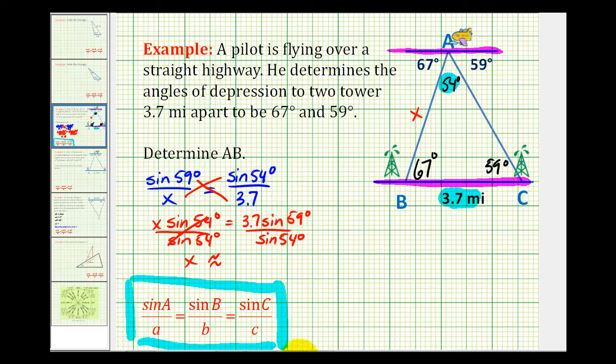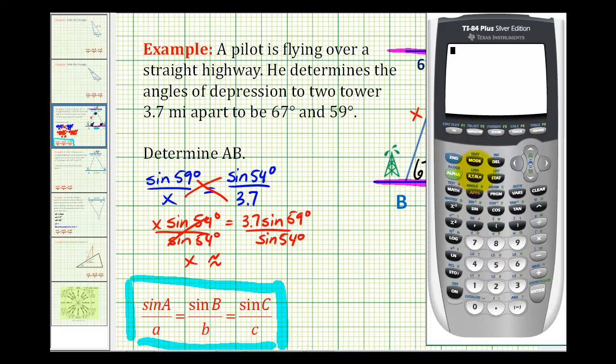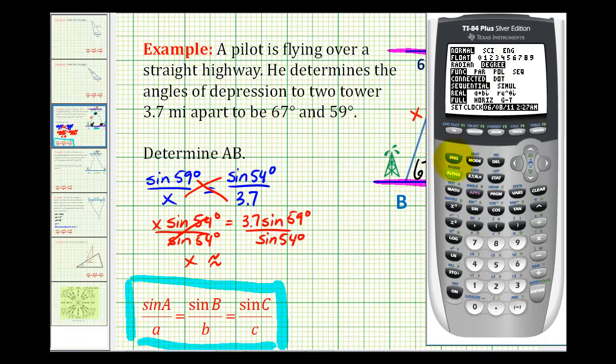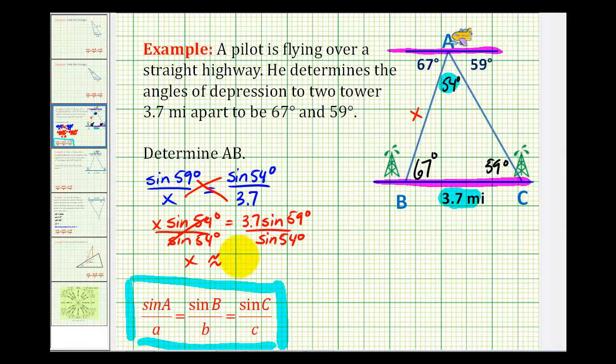So let's go to our calculator. Let's make sure that we're in degree mode. And we are. So our numerator is going to be 3.7 sine 59 degrees. And we'll divide this by sine 54 degrees. So X is approximately 3.9, and that'll be miles.